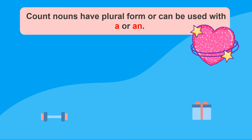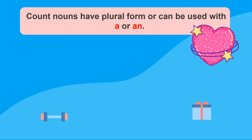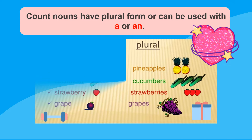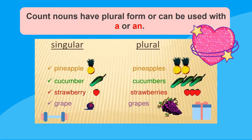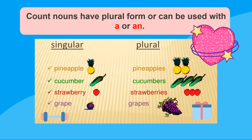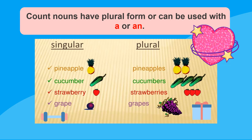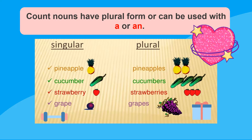Count nouns are the nouns that have a plural form, or they are also the nouns that you can use with a or an. So other examples of count nouns: I have here some singular examples of nouns like pineapple, cucumber, strawberry, and grape. On the other side, you have here the plural forms of these nouns. These are examples of count nouns.